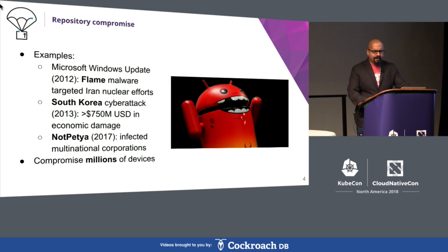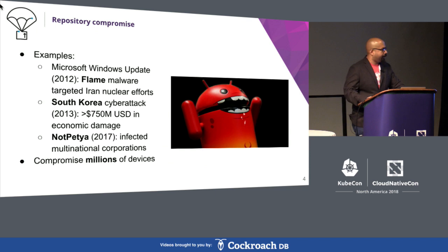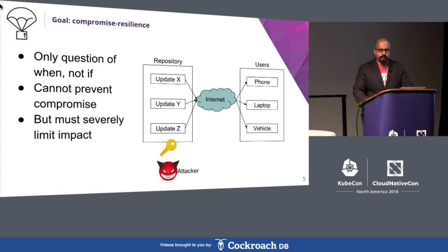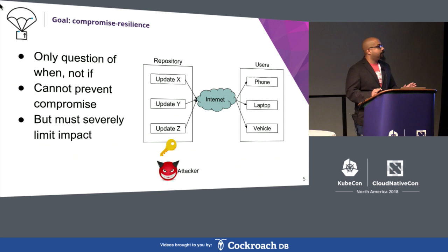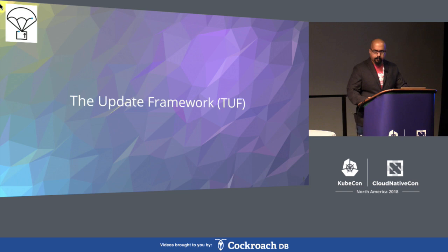Attackers get to compromise millions of devices all at once. The popularity of repositories is precisely what makes them attractive targets, especially nation-state attackers who have the resources and motive. We believe it is prudent to assume it's a question of when, not if, a repository compromise is going to happen. Our goal is not to prevent a compromise — even if attackers have access to signing keys on the repository, the damage must be limited to the greatest possible extent. We can use the Update Framework, or TUF, as the foundation for building compromise resilience.